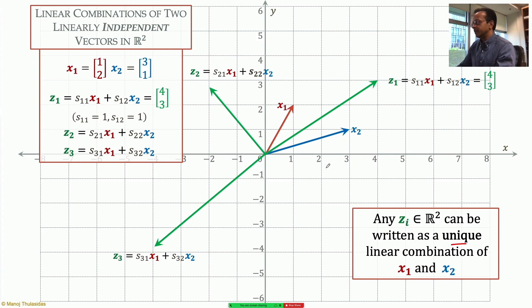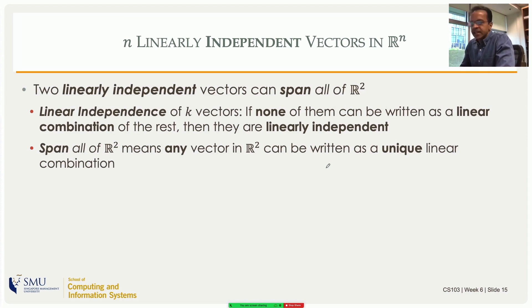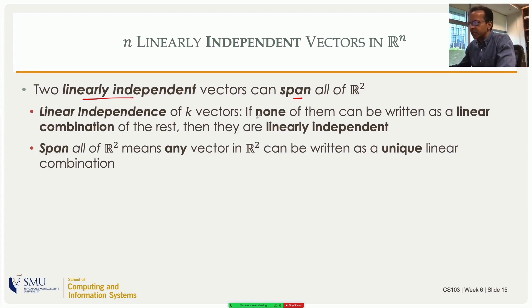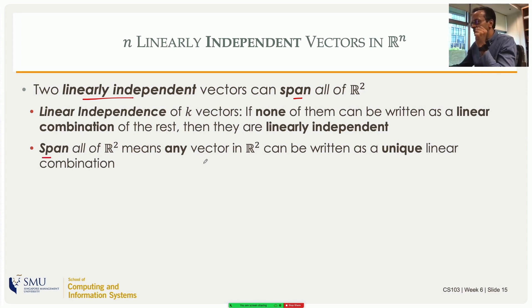We can extend this to n dimensions — we start with two dimensions, something we can visualize, and extend it. That's the game we play in linear algebra. Two linearly independent vectors can span all of R2. Any vector in R2 can be expressed as a linear combination of those two vectors. Now I'll formally define linear independence: if none of the k vectors can be written as a linear combination of the rest, they are linearly independent. If I take any k minus one of them and can express the kth as a combination of those, they're not linearly independent.